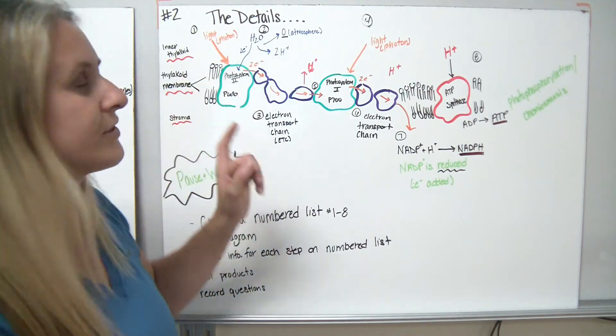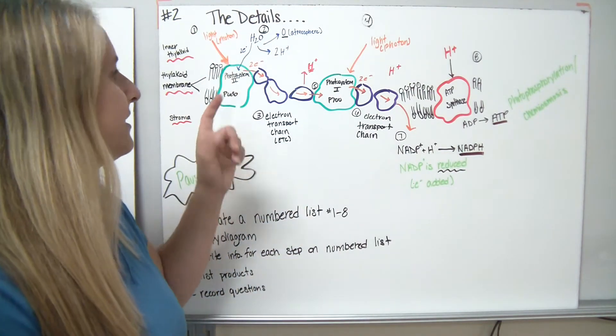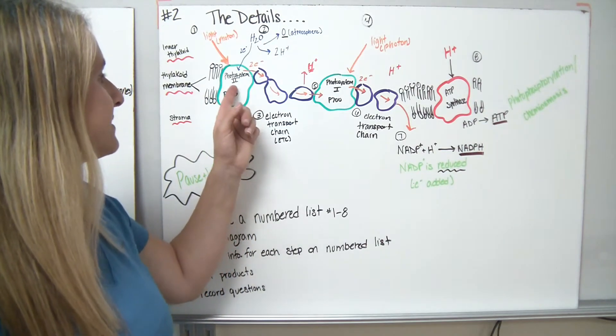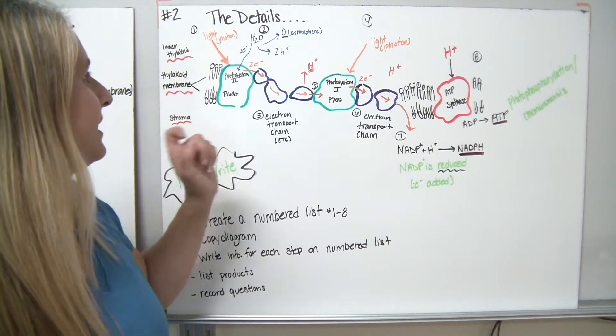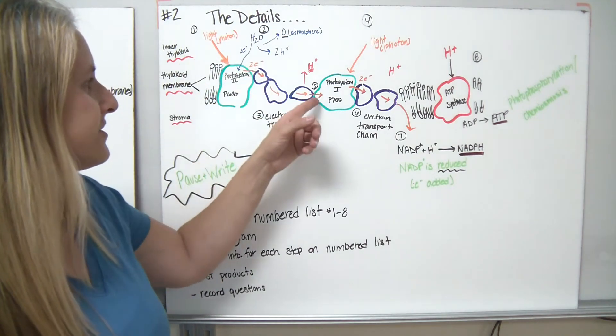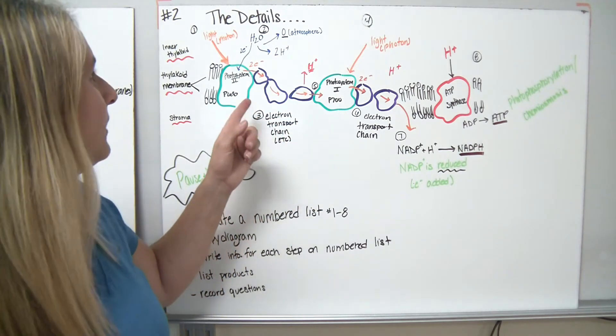So what happens is our light comes in, and light is really just in the form of photons. And the light comes in and it excites the electrons in these photosystem two areas, which we could also call P680. As we bring in the light and excite the electrons, two electrons are going to get transferred over through the electron transport chain to get over to photosystem one.